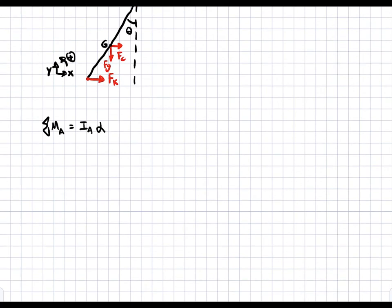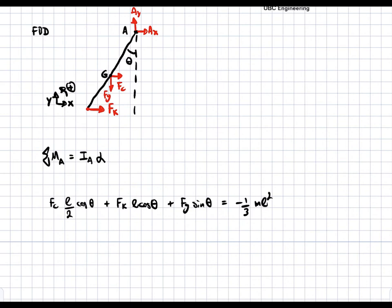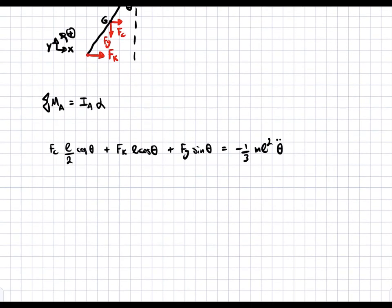The sum of moments equals: first the damper force Fc times l/2 times cos(theta) — the l/2 is because the damper is halfway along the length, and cos(theta) gives the perpendicular radius. Then Fk times l times cos(theta), using the full length l. Then Fg times sin(theta). This equals negative one-third m·l²·theta-double-dot, where theta-double-dot equals alpha.